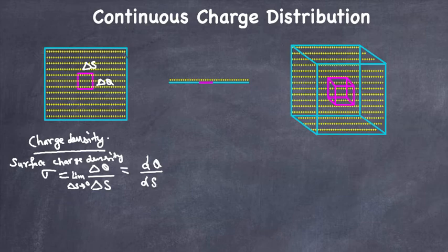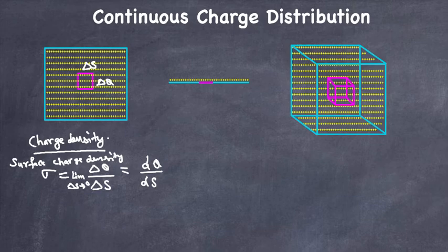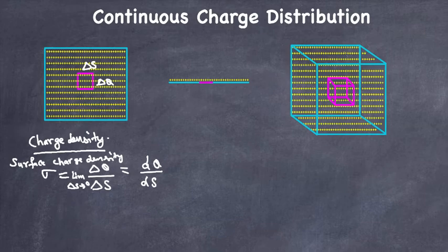The surface charge density Sigma, so defined, ignores the quantization of the charge and the discontinuity in the charge distribution at the microscopic level. So Sigma represents the macroscopic surface charge density in a continuous fashion. Similarly, if we have charge on a line — say a wire — we can apply linear charge distribution, and for a 3D body we can apply volume charge distribution.